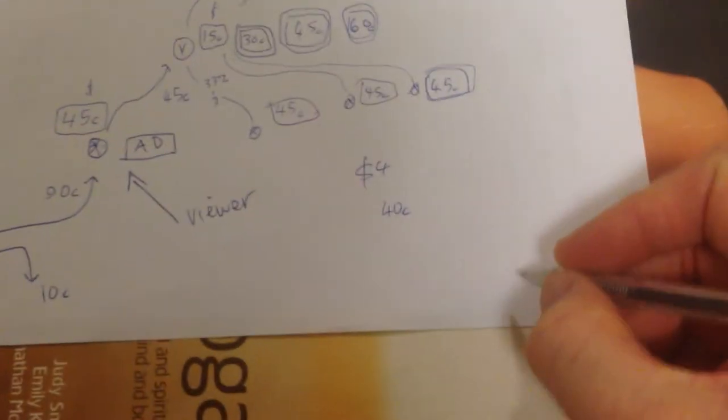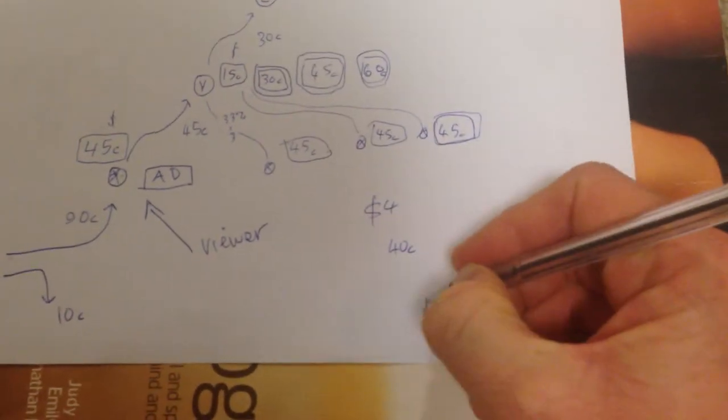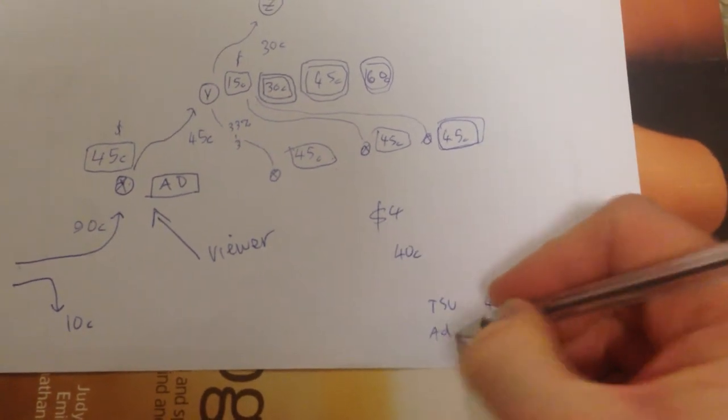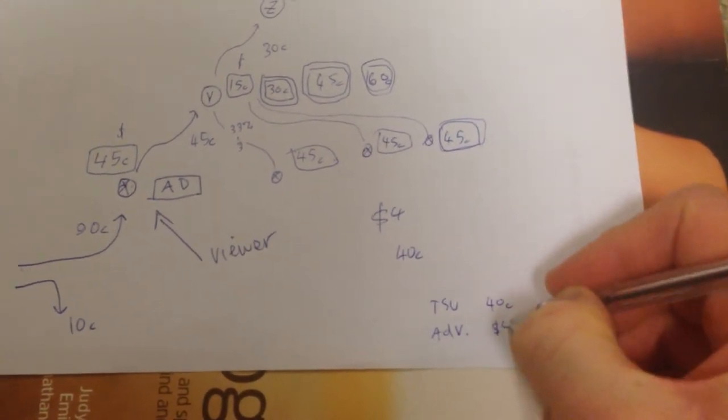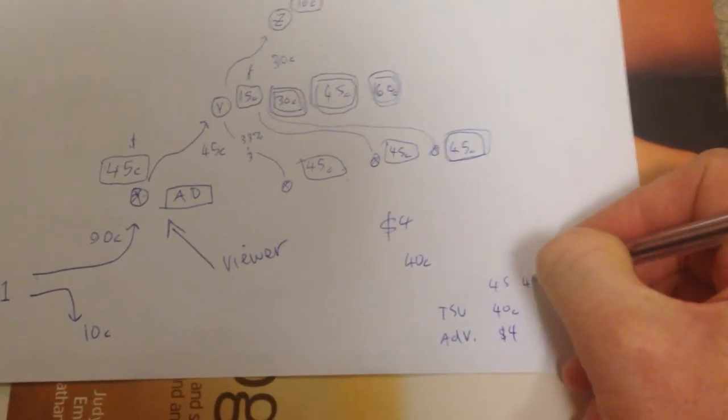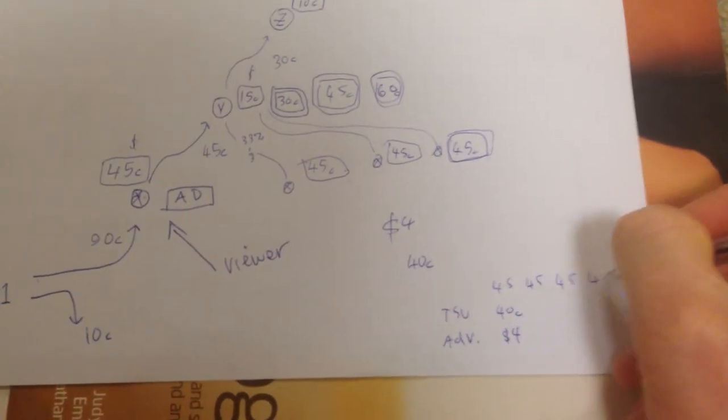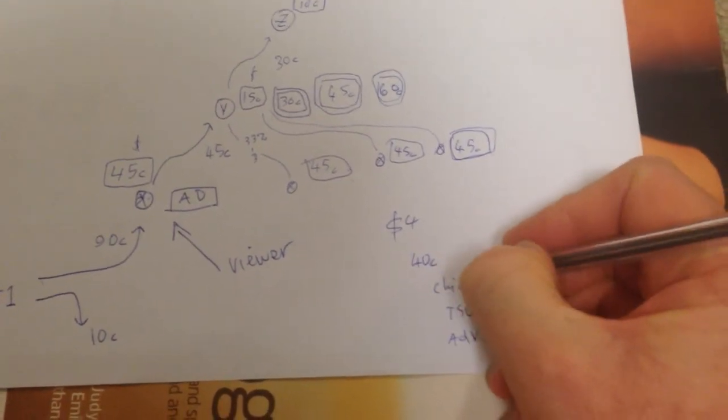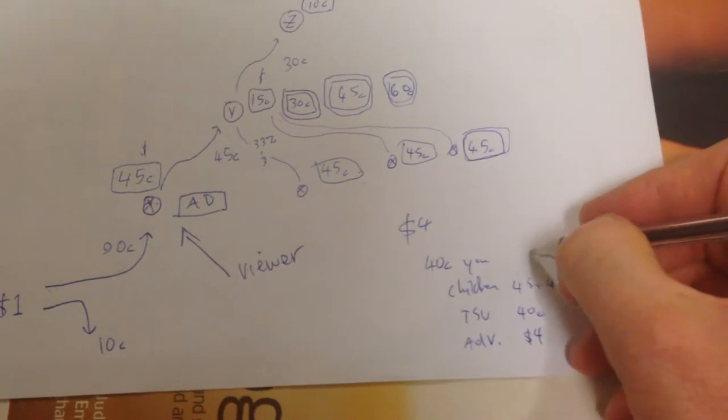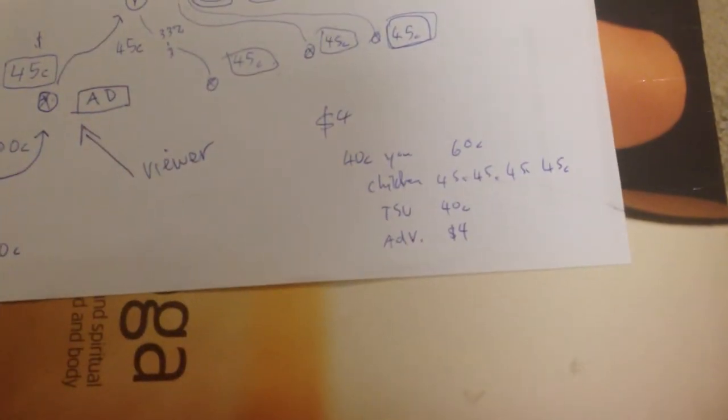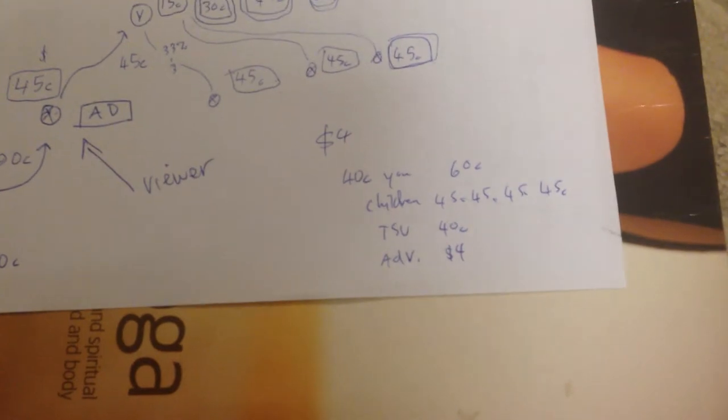So what that would look like is Sue makes $0.40, the advertiser, let's just say there's one advertiser, he's paid $4. Sue's made $0.40, you've got four people here who made $0.45 each. These are your children, and you made $0.60. That's what that looks like.